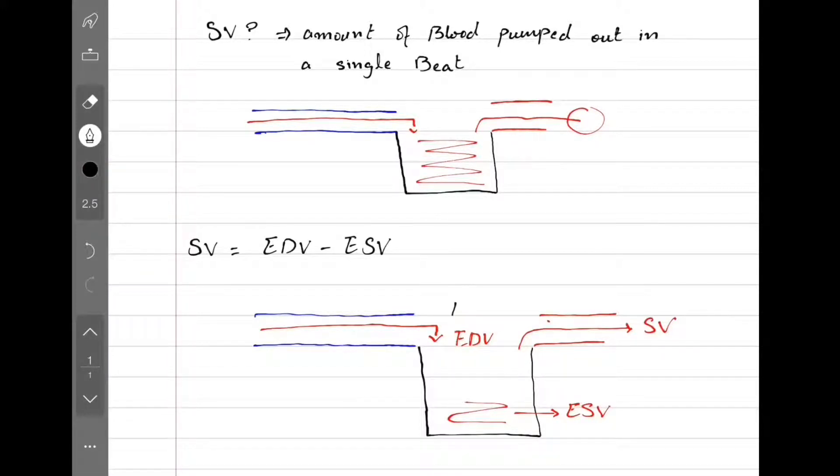Let's say we had 100 ml of blood coming in, so our end-diastolic volume is 100. Let's assume at the end of contraction 40 ml of blood is still left behind, so that gives us the end-systolic volume of 40 ml. Let's put these values into the equation. The answer is 60, so the stroke volume is 60 ml.